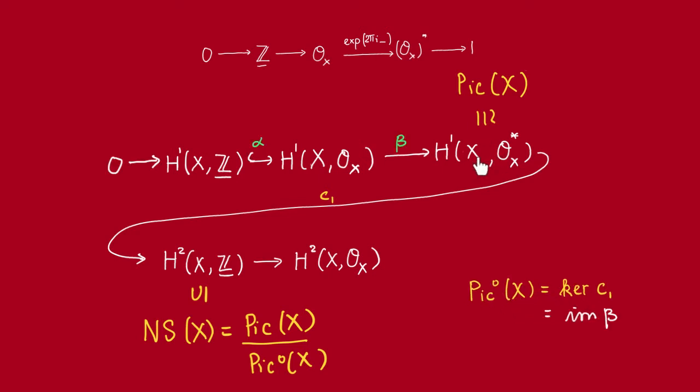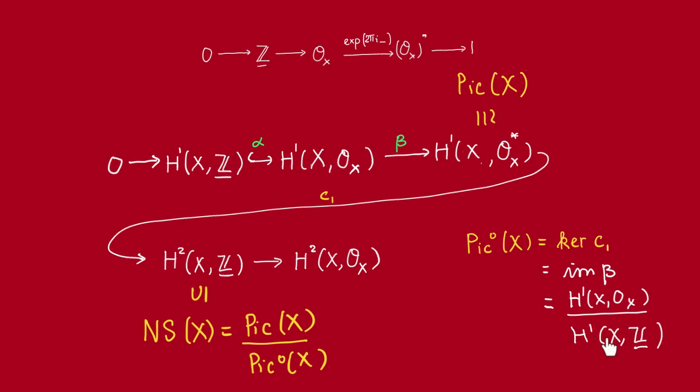Now, by exactness here, Pic⁰ being the kernel of this should be equal to the image of this map. Now then, by the first isomorphism theorem, the image of this map should be equal to the domain quotiented by the kernel. But this map is also exact here, so by exactness here, we know that this kernel has to be equal to this image, which is just this cohomology group.